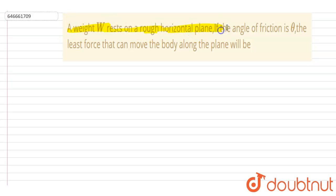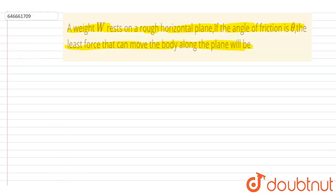Hello everyone. A weight W rests on a rough horizontal plane. If the angle of friction is theta, the least force that can move the body along the plane will be — so let me draw a block.